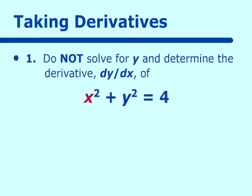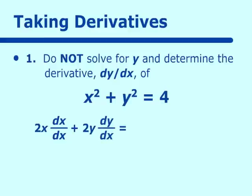We already know the derivative of x squared is 2x. What we have not talked about before, when using chain rule, is that final step: we take the derivative of x with respect to x, which is dx/dx, and normally we never saw this because it equals 1. So when we do our derivatives implicitly, we have to take this into account — what is that final derivative on the variable we are differentiating? That leads us to plus the derivative of y squared, which is 2y times dy/dx. The derivative of 4 is 0, and dx/dx becomes 1.